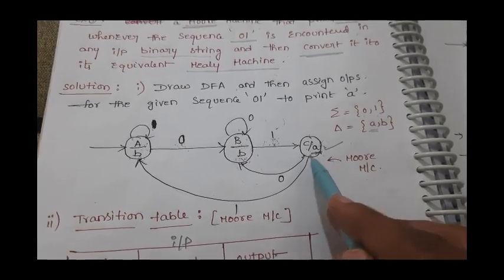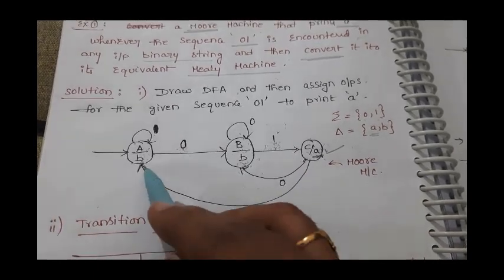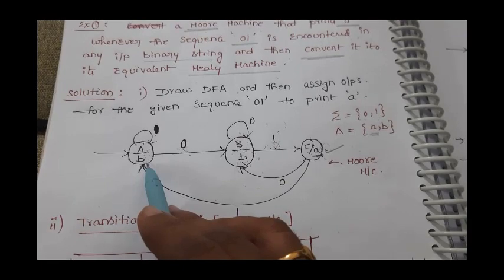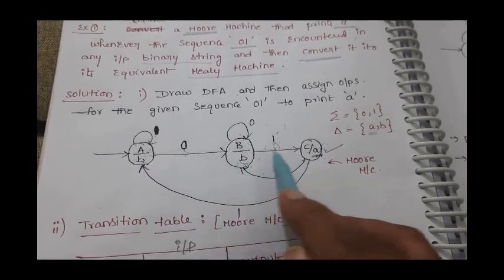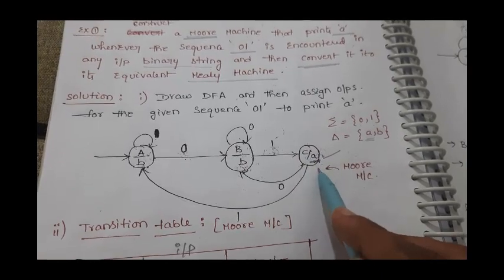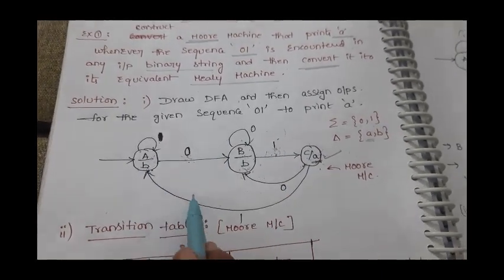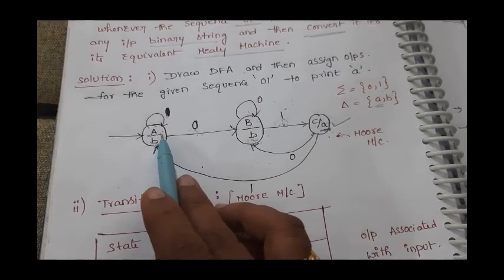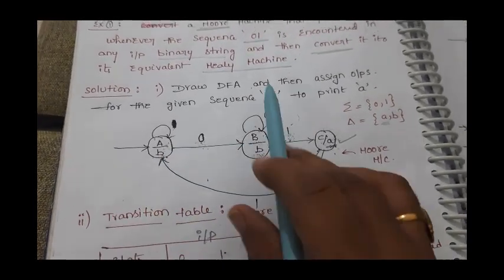If input 1 is received at state c, it is diverted to state a. After that there may be a chance of getting 0-1, so it goes to state c which prints 'a'. Like this I have constructed a Moore machine where outputs are associated with states — this is the complete Moore machine for this objective.